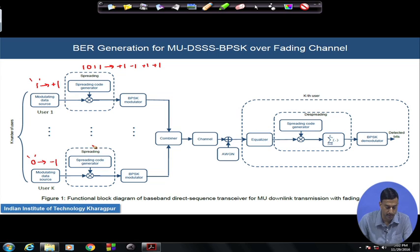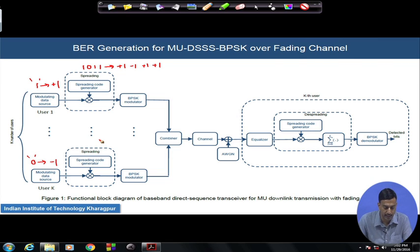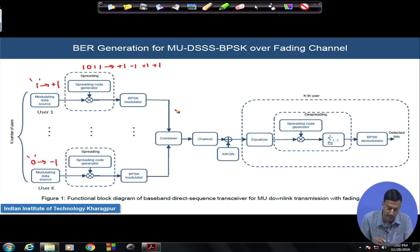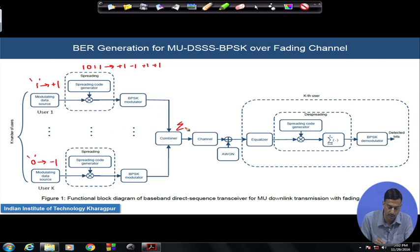Examples of such codes include Walsh-Hadamard codes, where the code sequences correspond to rows of the Hadamard matrix, which we have generated previously in our tutorials where we showed the MATLAB code for its generation. The combiner in our case will simply sum up the resultant spread signal after multiplication. Depending on the number of users, we sum up the corresponding elements in order to get the composite signal.